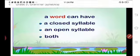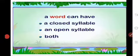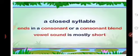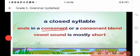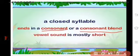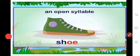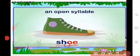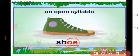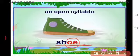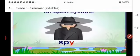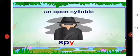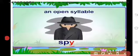A word can have a closed syllable, an open syllable, or both. A closed syllable ends in a consonant or a consonant blend, and the vowel sound is mostly short. An open syllable ends in a vowel — for example, 'shoe': S-H-O-E, where O-E are vowels at the end with no letters after them. Also 'spy': S-P-Y — Y is at the last position, so it is also an open syllable.